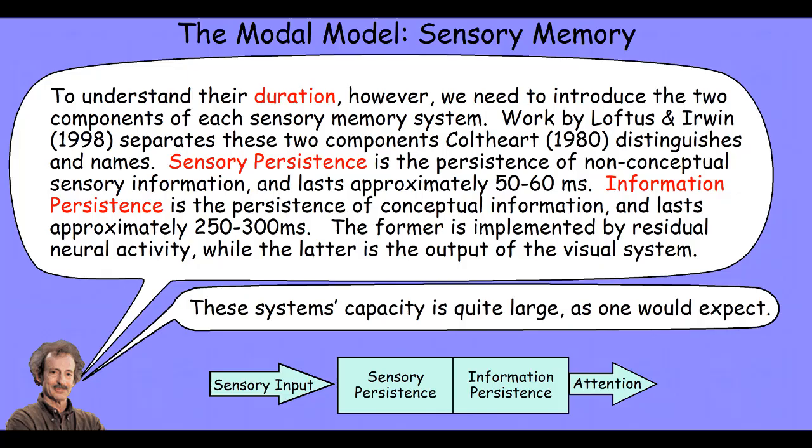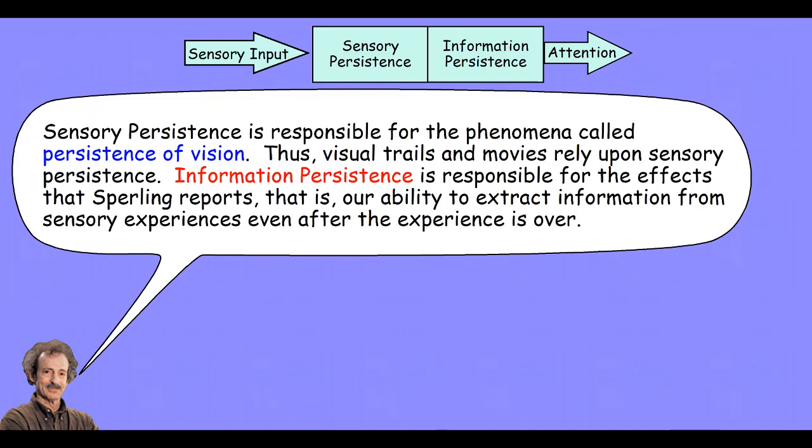These memory systems have quite large capacities, as you would expect, since quite large parts of our brains are devoted to sensory processing, particularly to vision. Sensory persistence is responsible for the phenomenon called persistence of vision. Thus, visual trails and movies — your ability to see movies as continuous motion — are caused by sensory persistence. Information persistence is responsible for the effects that Sperling reports: our ability to extract information from sensory experiences even after that experience is over.